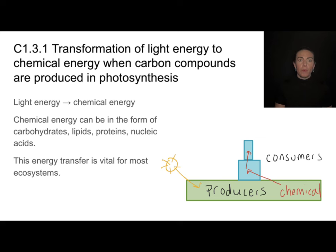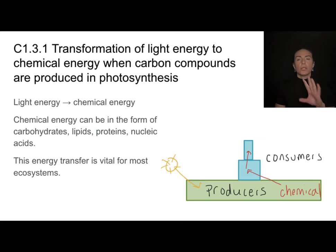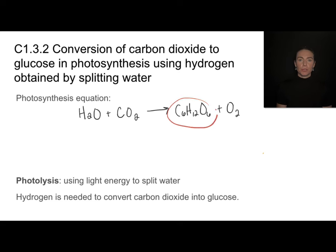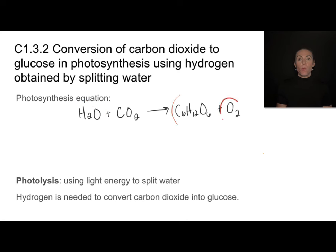That chemical energy can be in the form of carbohydrates, lipids, proteins, nucleic acids — all kinds of things. We're going to focus in on glucose as the product of photosynthesis in these examples. To manufacture glucose, producers are going to take water and carbon dioxide and convert that into glucose with an oxygen byproduct.